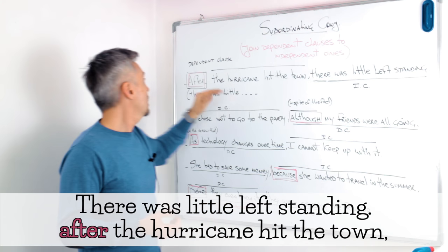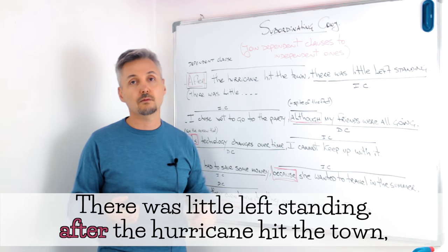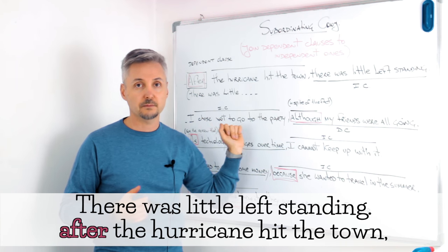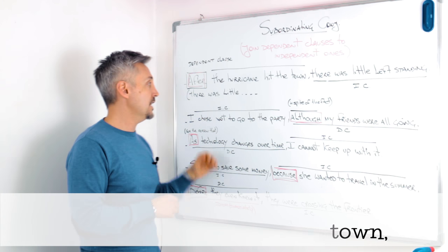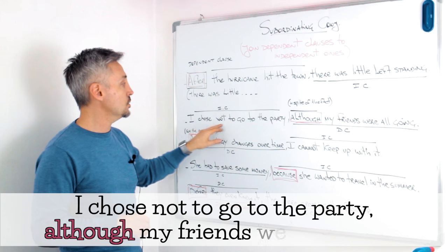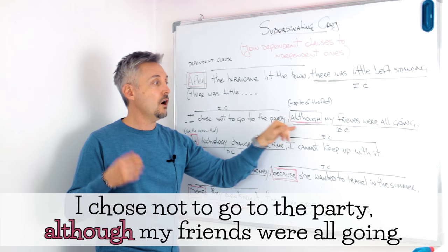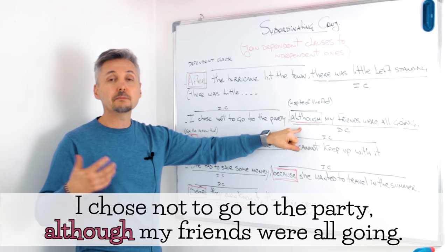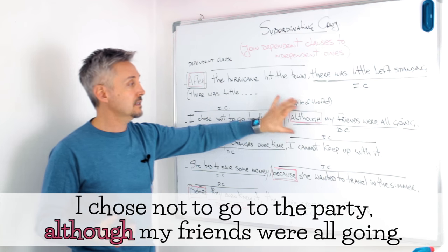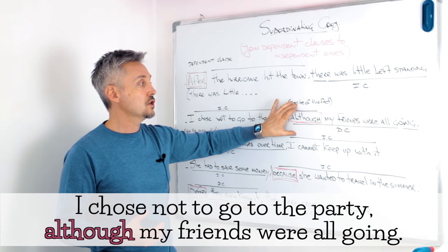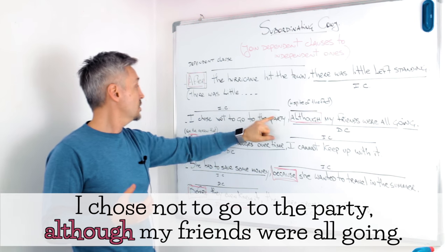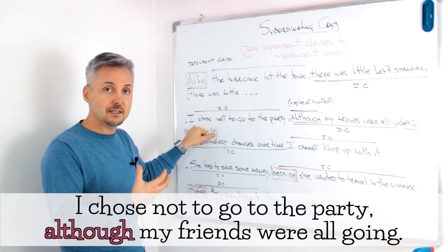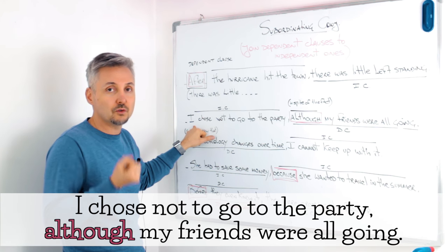We can also say 'there was little left standing after the hurricane hit the town,' so we can exchange the order of the clauses. The other example was: I chose not to go to the party, although my friends were all going. 'I chose not to go to the party' is an independent clause. 'Although' means 'in spite of the fact,' and 'although my friends were all going' is the dependent clause — so we need another clause to give meaning to the sentence.